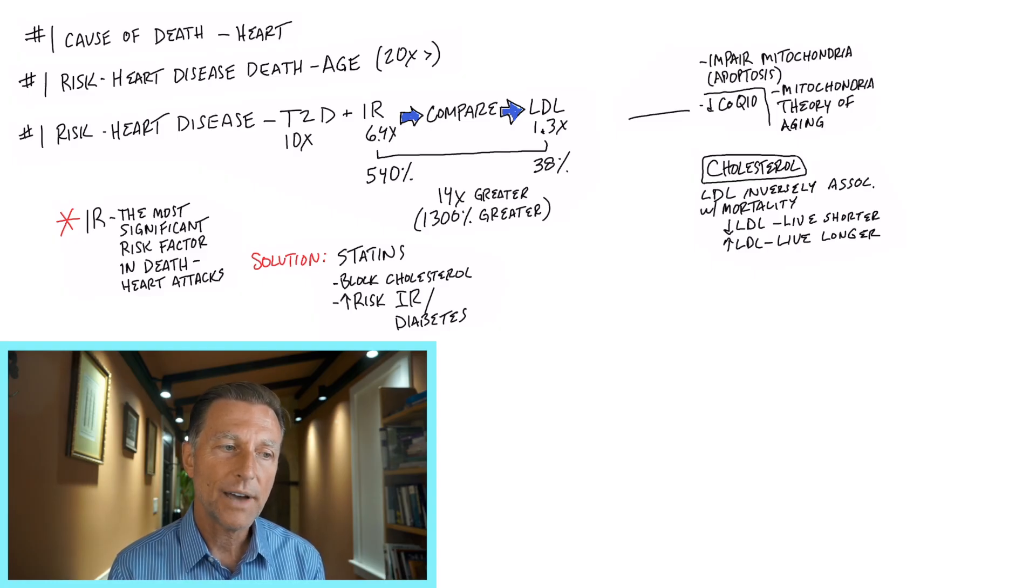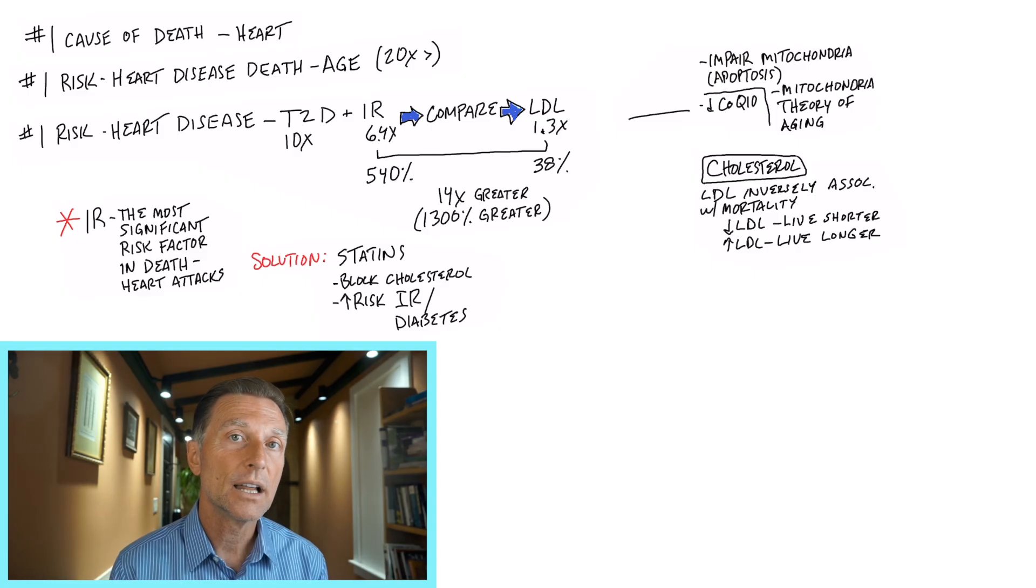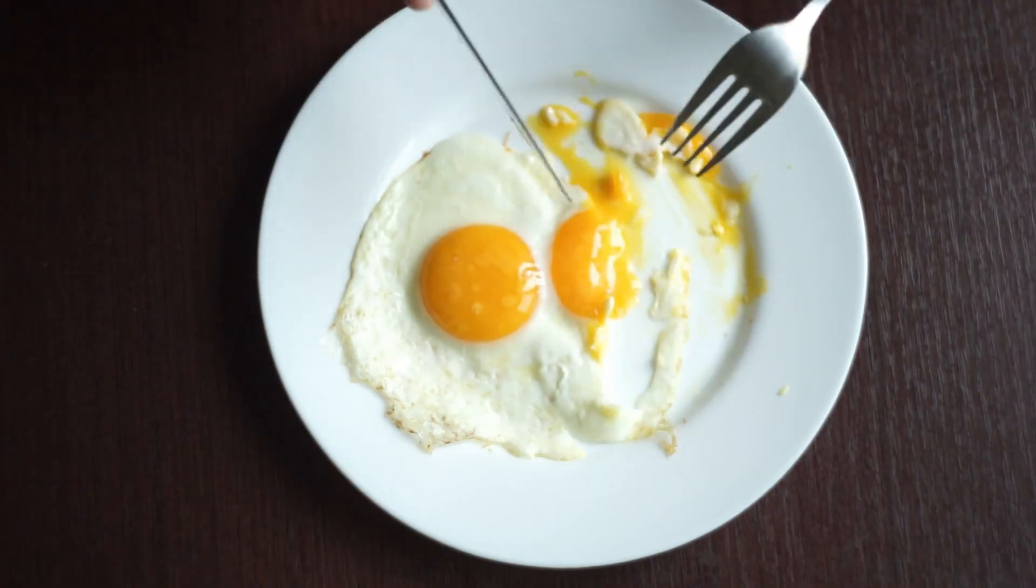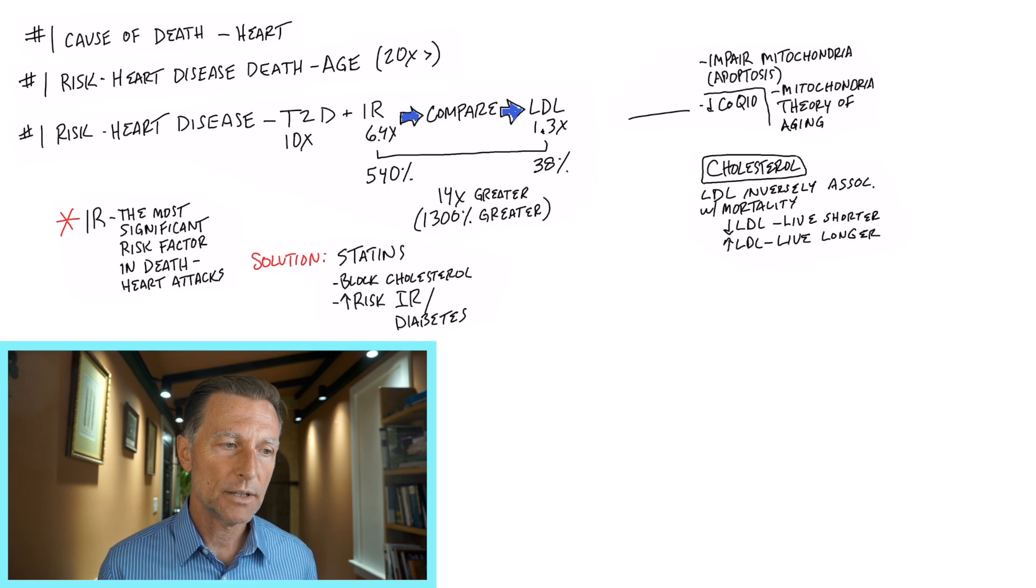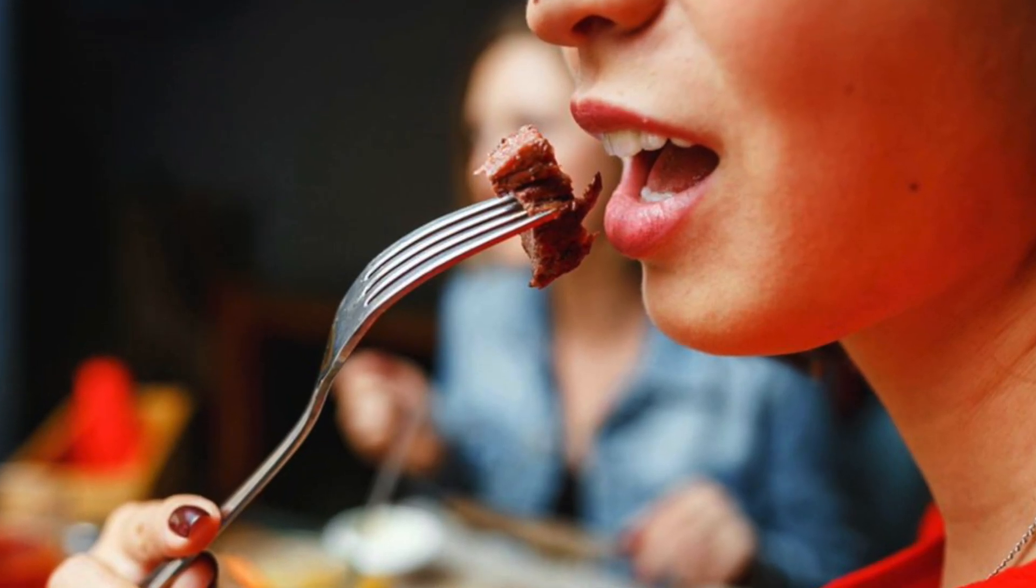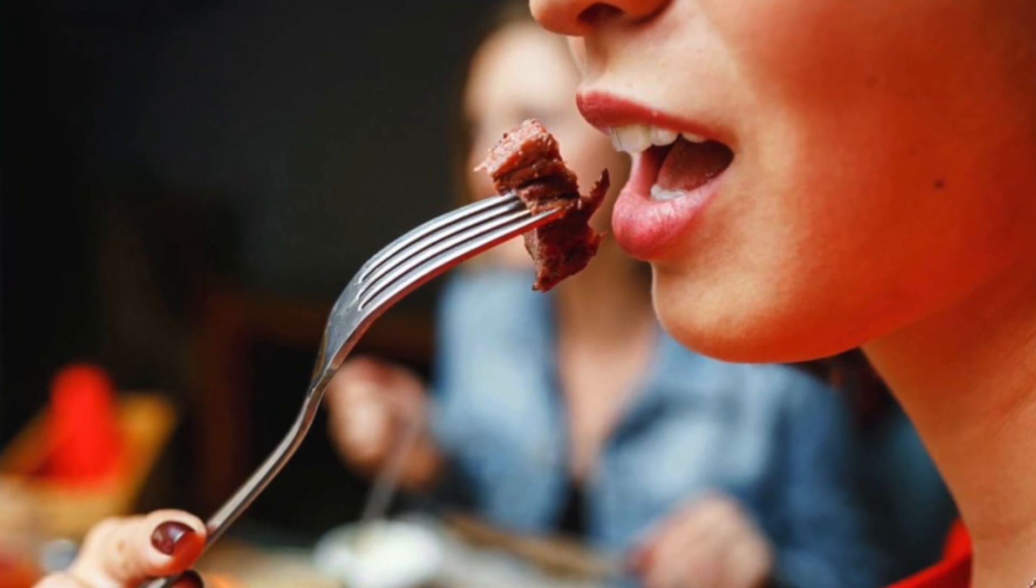And the proteins that are the fattiest trigger insulin the least. This is why if you're going to eat an egg, you eat the whole egg, not the egg white. This is why when you eat chicken, you want the skin on it. This is why when you eat meat, you don't want to buy the leanest meat. So it can protect you against this insulin problem.